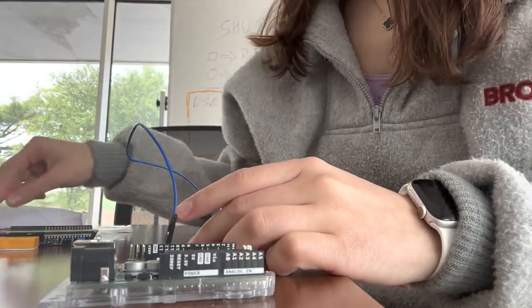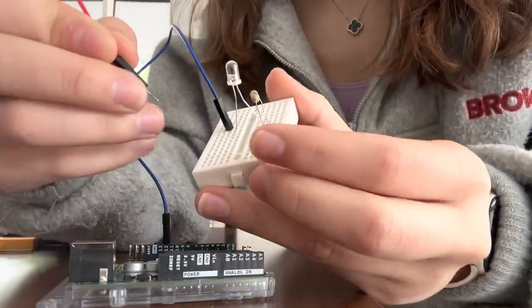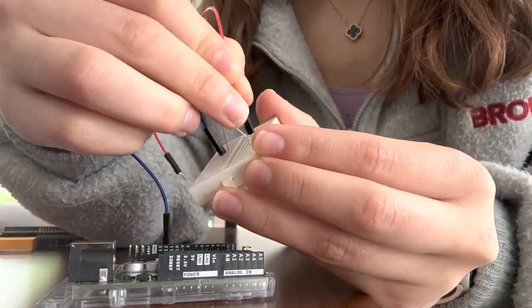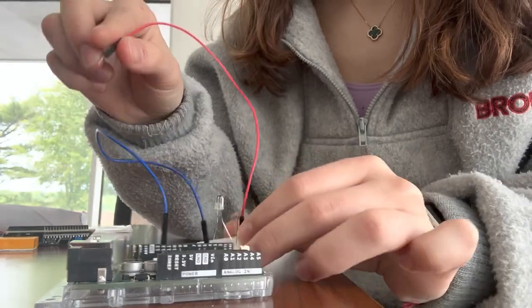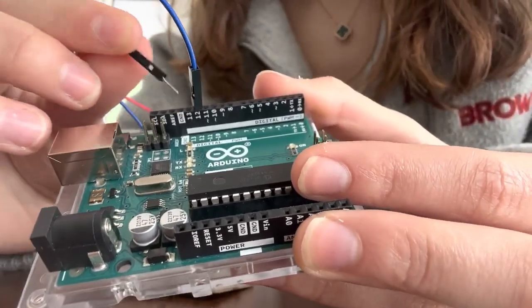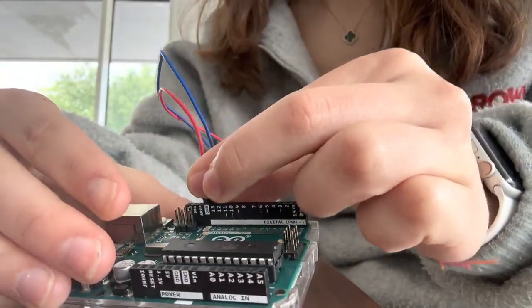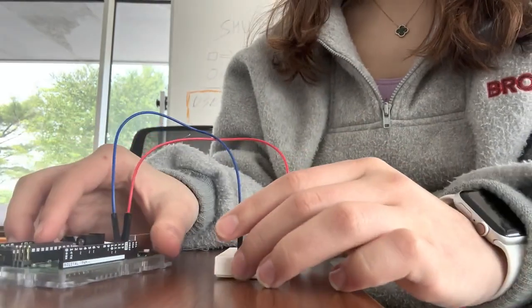Which is also on the digital side. And then locate your ground on the digital side, it should be two up from D12. And there you go, you now have your sender.